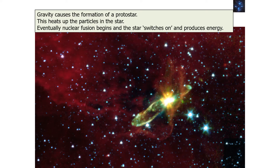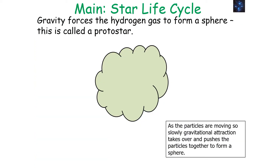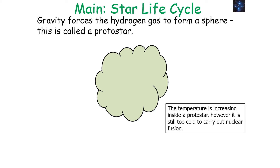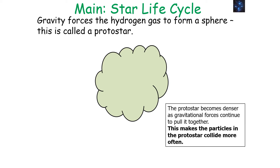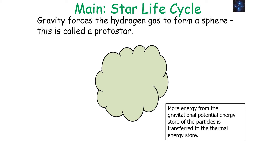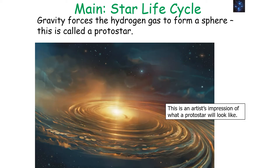Gravity can then cause the formation of a protostar from the nebula, heating up the particles until nuclear fusion begins and the star switches on and produces energy. Gravity forces the hydrogen gas to form a sphere — since the particles are moving so slowly, gravitational attraction takes over and pulls them together. The temperature inside a protostar is increasing, however it is still too cold to carry out nuclear fusion. The protostar becomes denser as gravitational forces continue to pull it together, causing particles to collide more often, transferring gravitational potential energy to the thermal energy store, and so the temperature of the protostar increases.